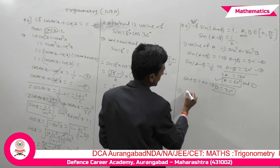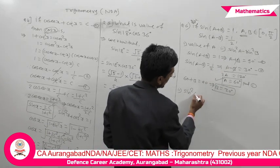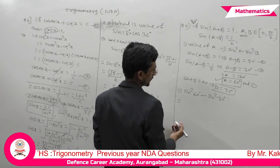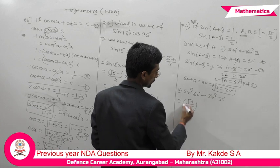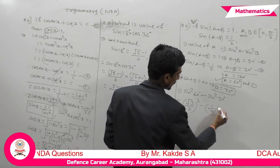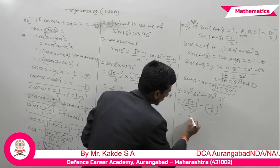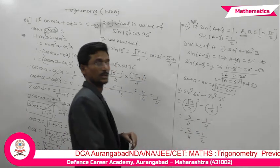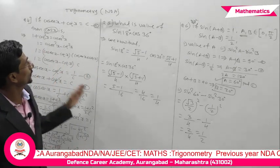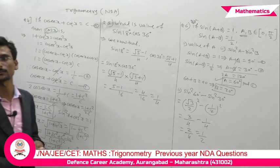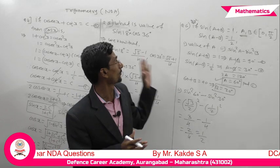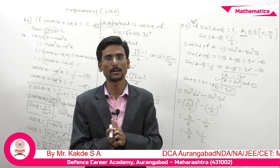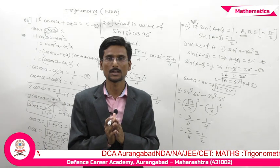Now compute sin²A - sin²B with A = 60° and B = 30°. sin²60° = (√3/2)² = 3/4, and sin²30° = (1/2)² = 1/4. So sin²60° - sin²30° = 3/4 - 1/4 = 2/4 = 1/2. The answer is 1/2. This is the solution of examples four, five, and six. In the next video we will see more examples of Trigonometry from NDA. Thank you.